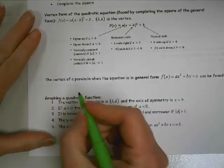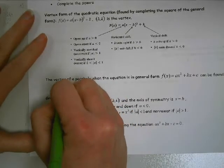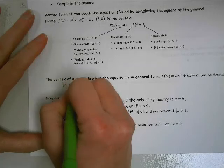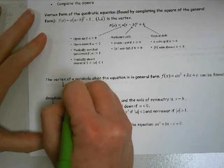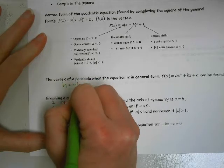The vertex. There's a formula for it. The h value you find, or that would be the x of the vertex, right, is negative b over 2a.